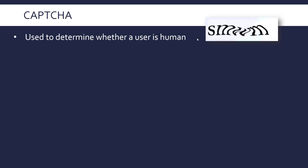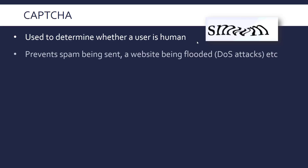In theory, only a human will be able to understand what a CAPTCHA says. This might be there to prevent spam — for example, to access an email service you have to go through a CAPTCHA so a bot can't just send spam emails. You might also encounter a CAPTCHA between accessing a website and actually using it, which can help prevent the website being flooded in a denial of service attack, where you repeatedly request something from a web server until it goes down.